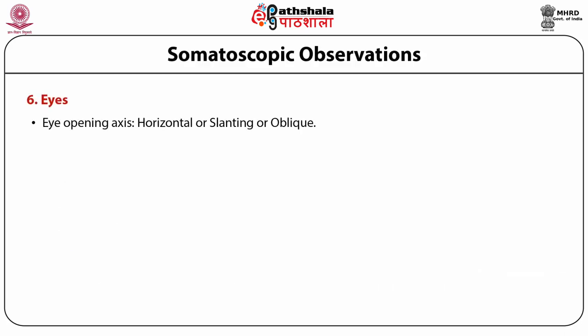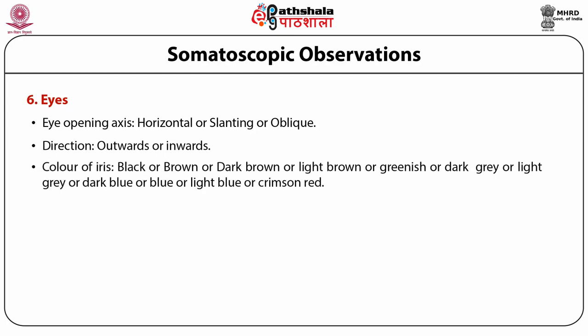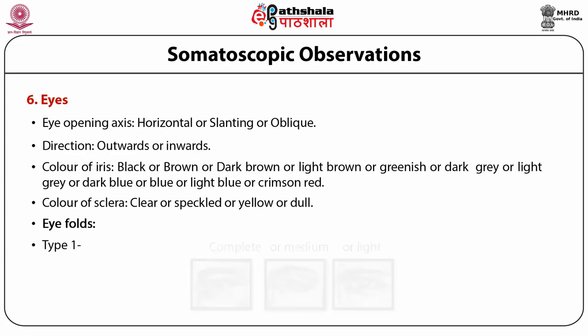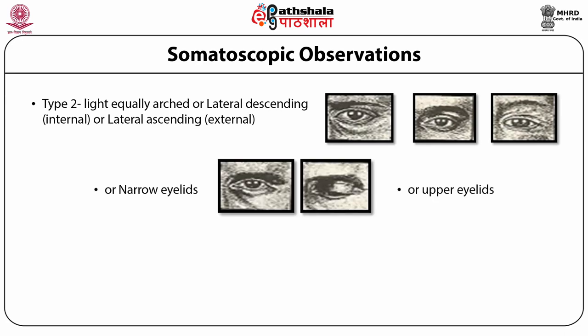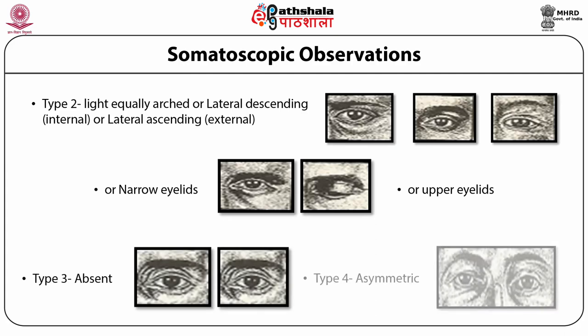Eyes: the eye opening axis may be horizontal, slanting, or oblique; direction may be outwards or inwards. Color of the iris may be black, brown, dark brown, light brown, greenish, dark gray, light gray, dark blue, blue, light blue, or crimson red. Color of the sclera: clear, spangled, yellow, or dull. Eye folds are of types: Type 1 — complete, medium, or light; Type 2 — lightly equally arched, lateral descending (internal), or lateral ascending (external), narrow eyelids, or upper eyelids; Type 3 — absent; Type 4 — asymmetric.